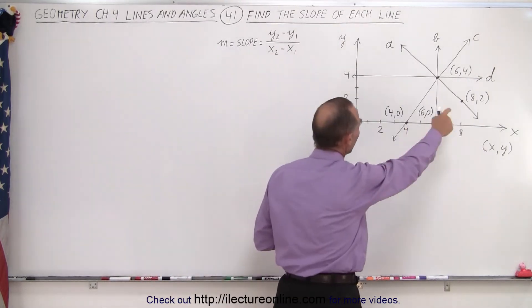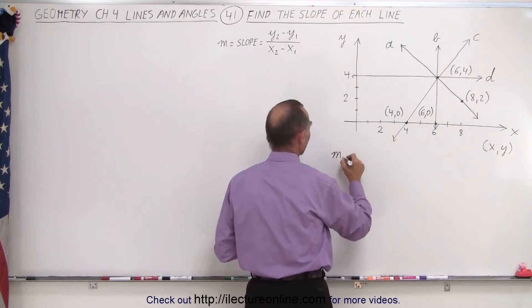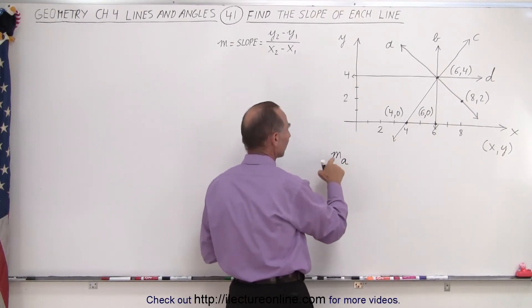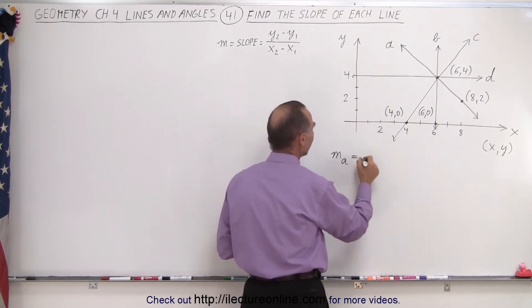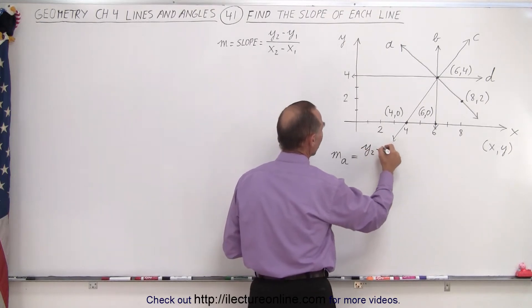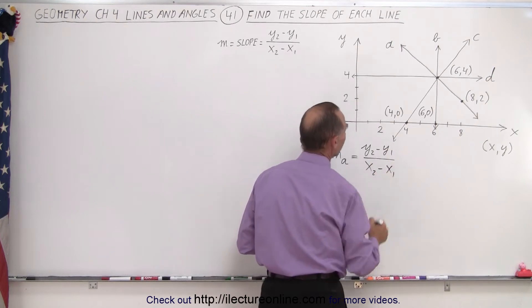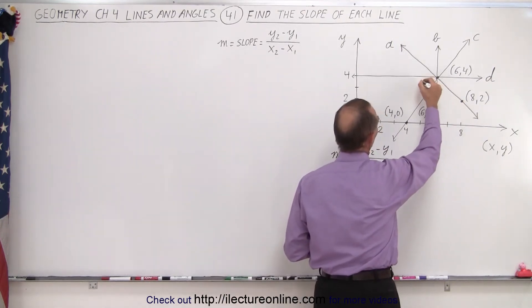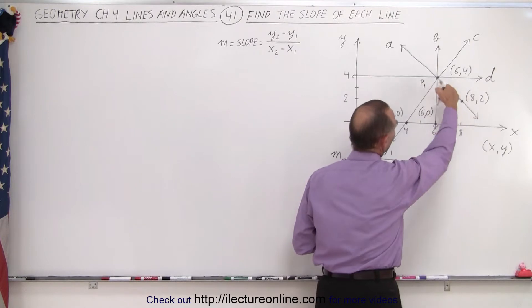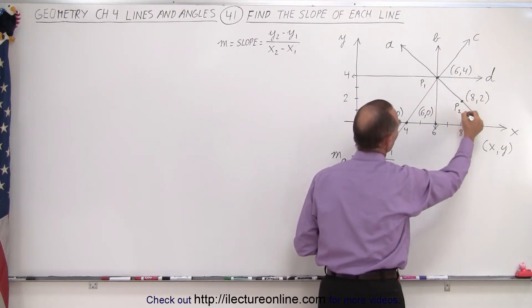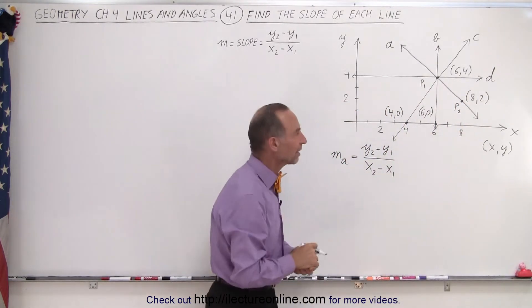Let's find the slope of line a. I can write it as m sub a, which means I find the slope for line a, and that is equal to y2 minus y1 over x2 minus x1. So I go over here and notice I can call this point one, and I can call this point two, indicated by p sub one and p sub two.